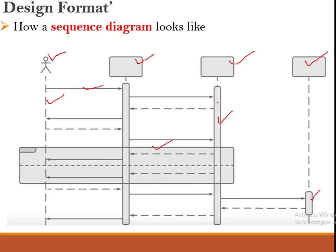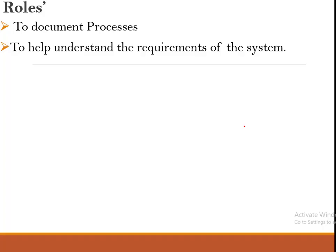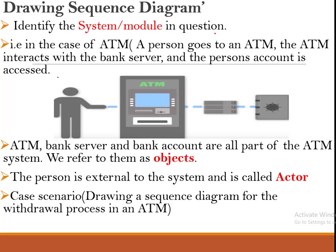Why do we need a sequence diagram? First, it helps us to document the process — we are able to understand the entire process from the beginning to the end. The other reason is that it helps us to identify and understand the requirements expected from a particular system.